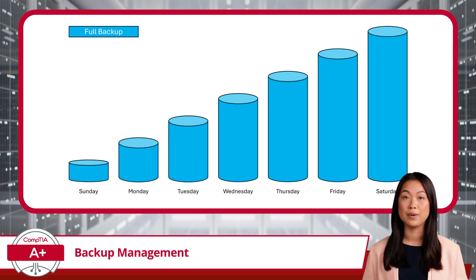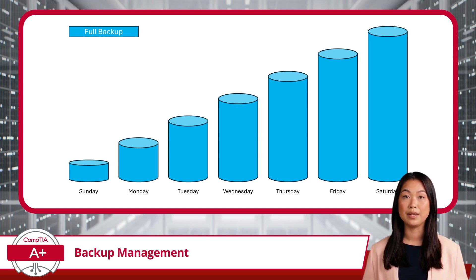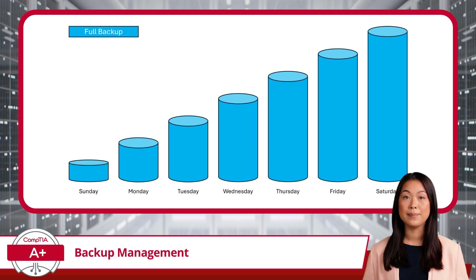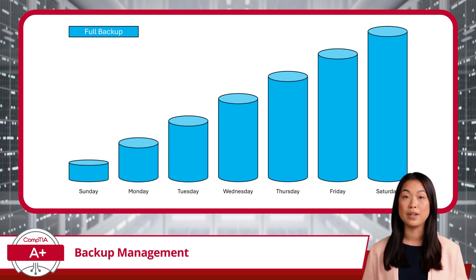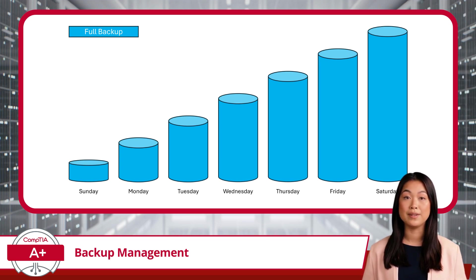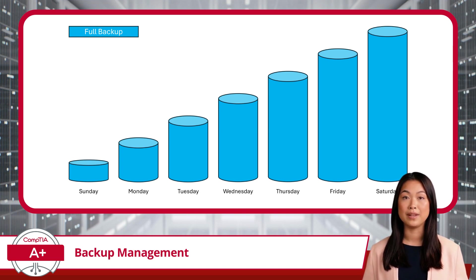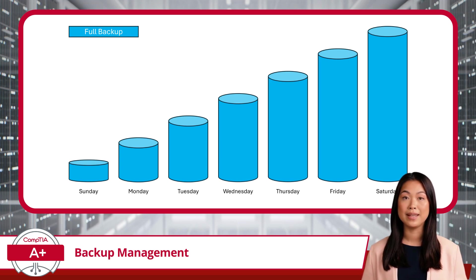If something goes wrong and you need to restore your data, a full backup has everything in one place, ready to go. You don't need to search for pieces or combine data from different backups — it's fast and simple when it comes to recovery. However, creating a full backup takes time and requires a lot of storage space, because you're copying everything. For this reason, full backups are usually done less frequently and are often paired with other, more efficient backup types to save time and storage space.